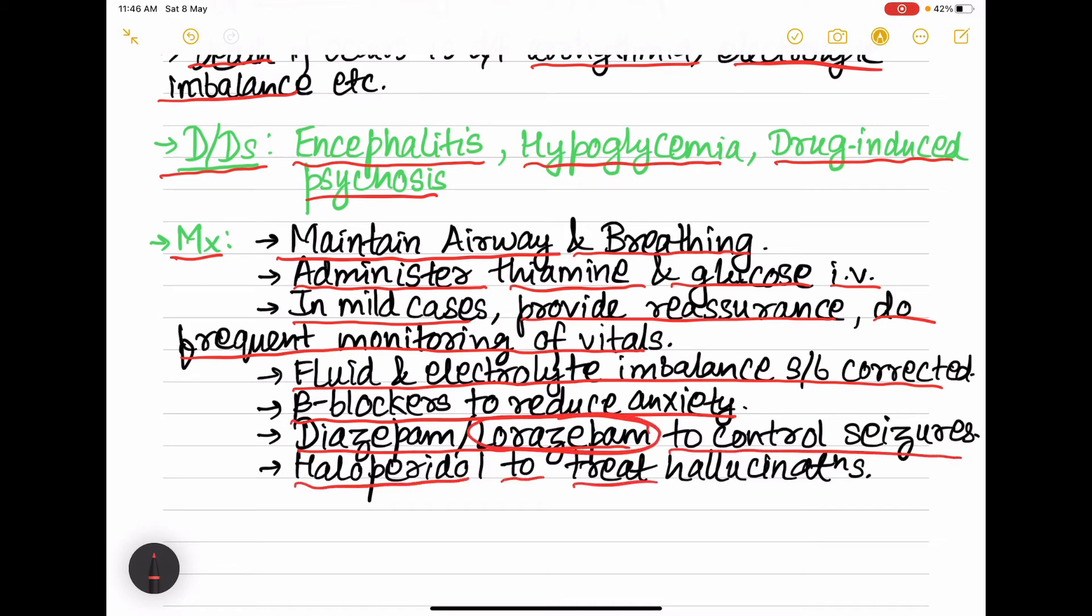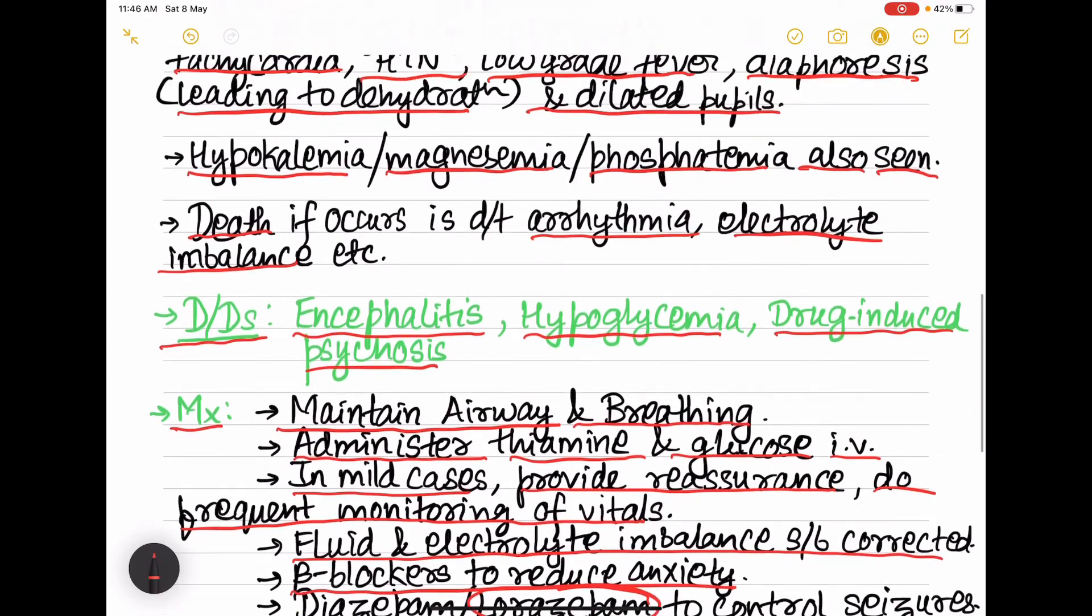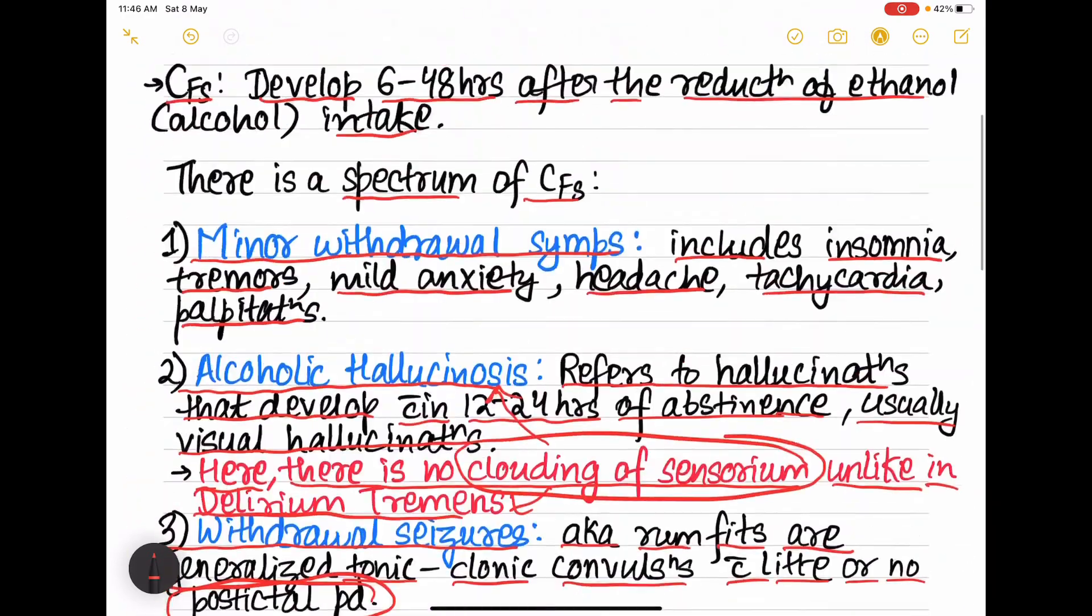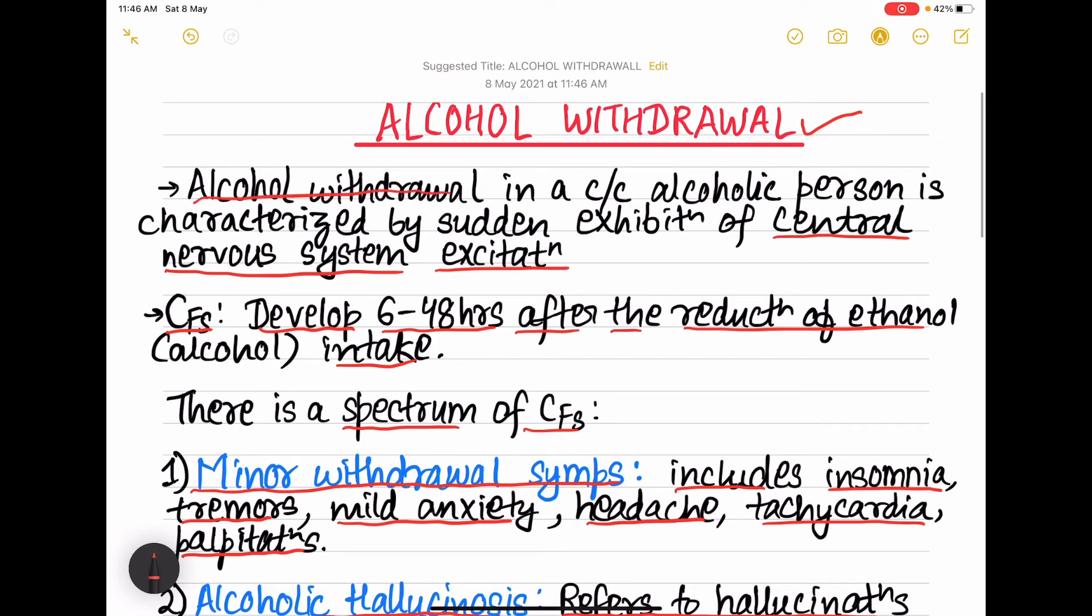So that's it guys. Now let's revise once again. First is alcohol withdrawal. It is seen in chronic alcoholic person when there is a stoppage of alcohol and it is characterized by exhibition of central nervous system excitation.